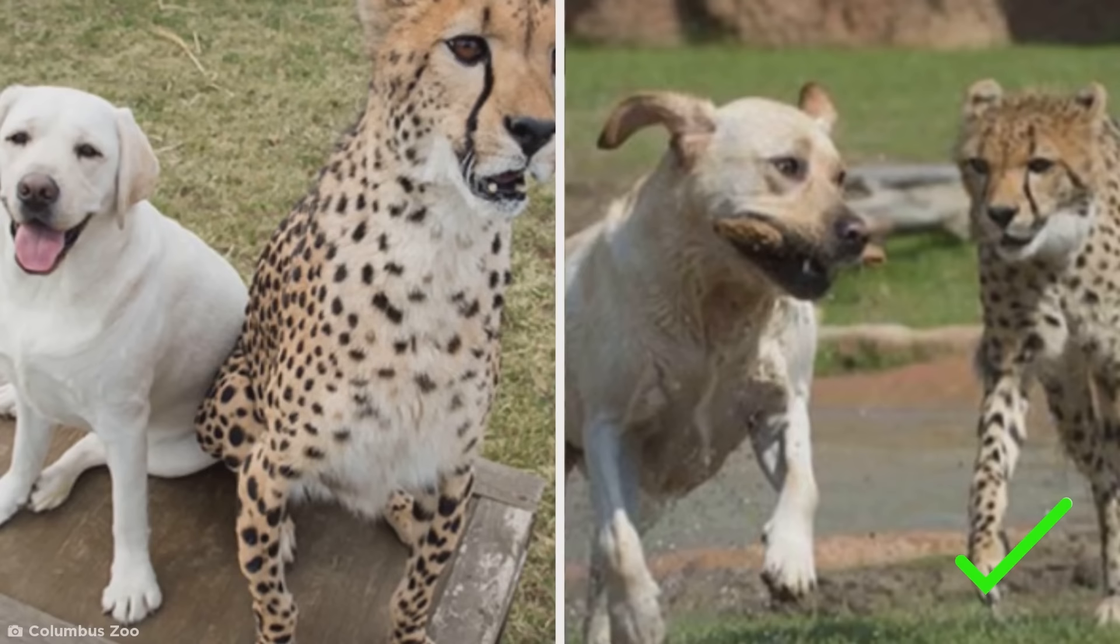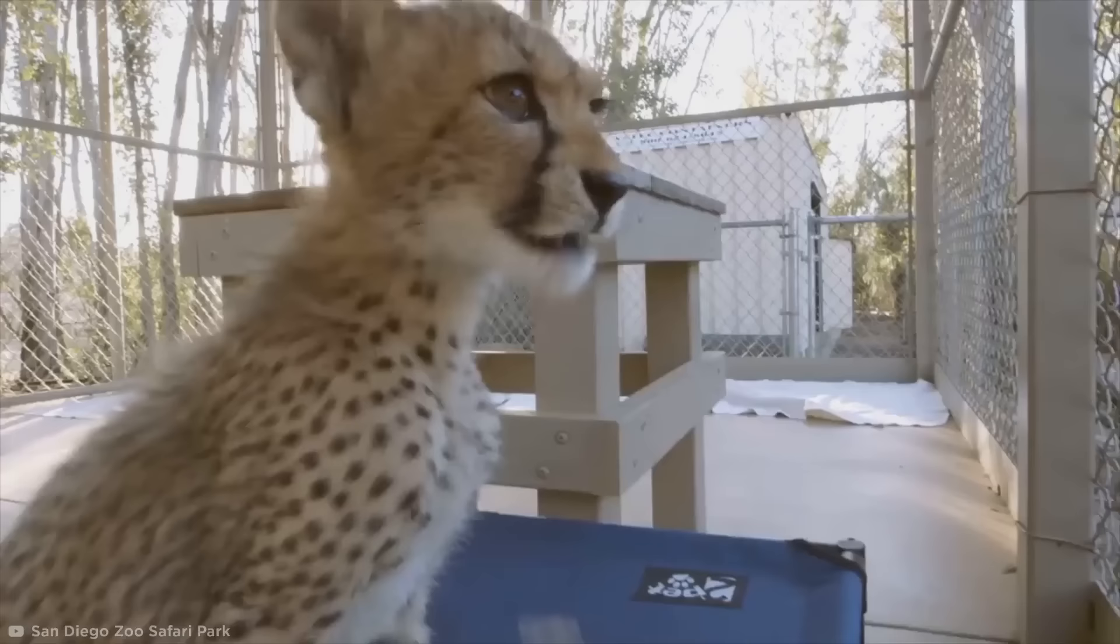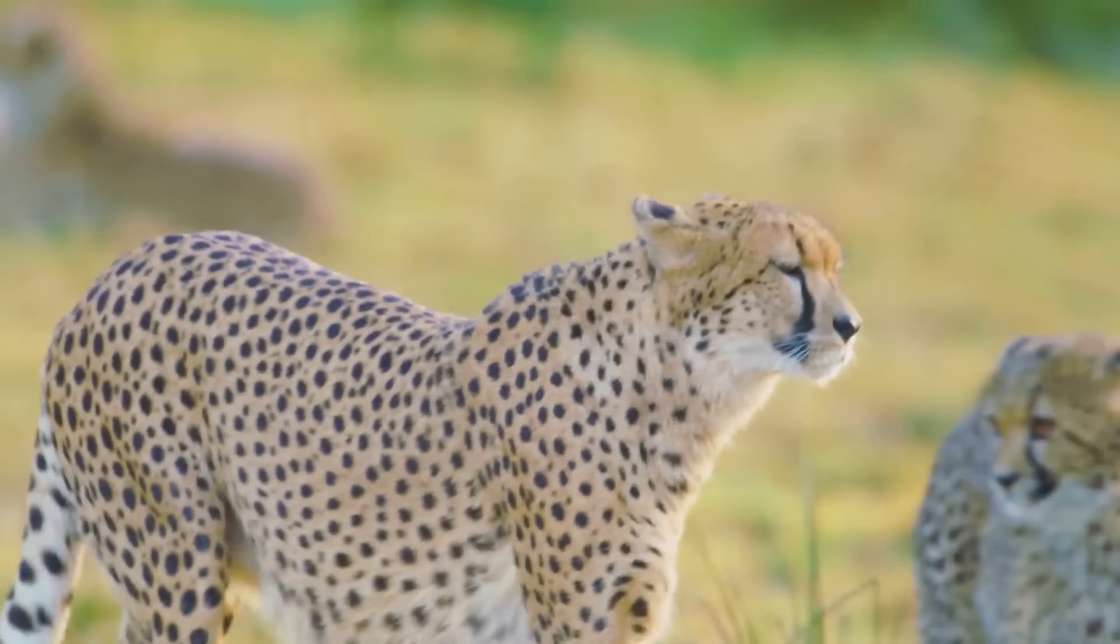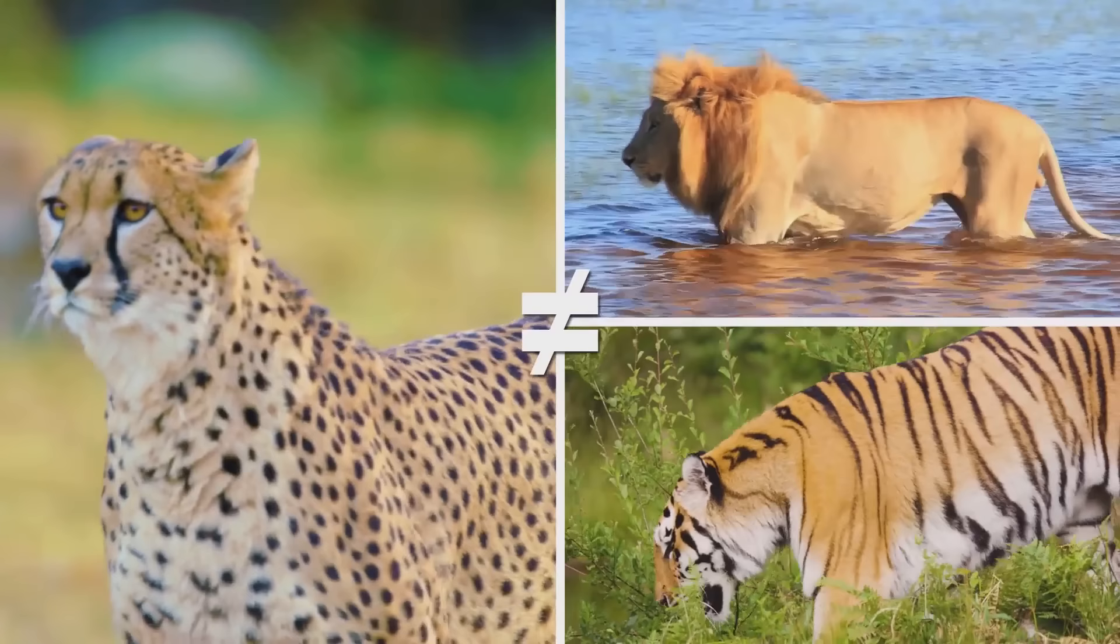That's right, it turns out cats and dogs do get along after all. According to Janet Rose Hinostroza, animal training supervisor at the San Diego Zoo Safari Park, a dominant dog is very helpful because the African animals are quite shy instinctively and you can't breed that out of them. Cheetahs are inherently different from their cat cousins like lions and tigers because they are wired for flight rather than fight. At heart, they're nothing more than really fast scaredy cats.